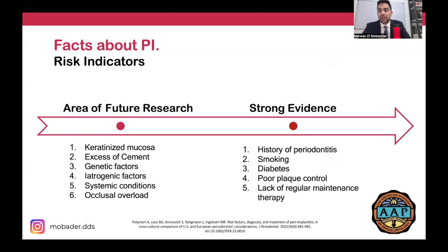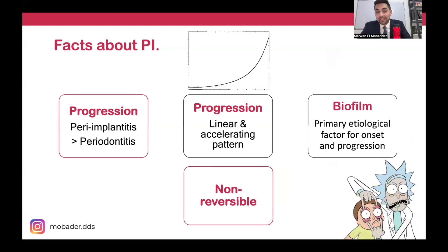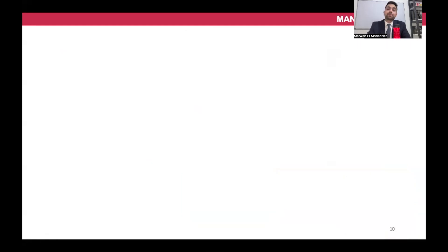There are other areas of future research such as keratinized tissue. Now, some more fascinating facts about peri-implantitis: first, its progression is more aggressive than periodontitis. Placing a dental implant may be the last treatment available to a patient, yet bone destruction is more severe. It is related to biofilm, it is non-reversible, and its progression is linear and accelerating — each year the patient loses more bone than the previous year.